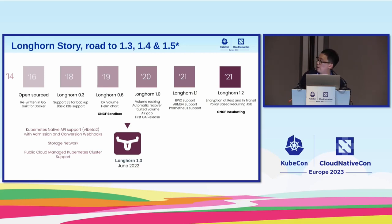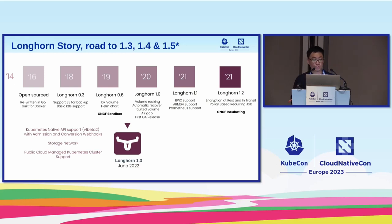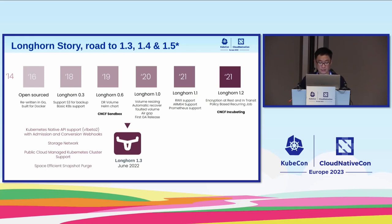We also support node cost autoscale as experimental, and in version 1.5 we plan to make it GA. The criteria includes testing on three major public cloud distros. We also introduced space-efficient snapshot purge — a new strategy to delete the first snapshot next to the volume head, especially for users who don't care about snapshots.